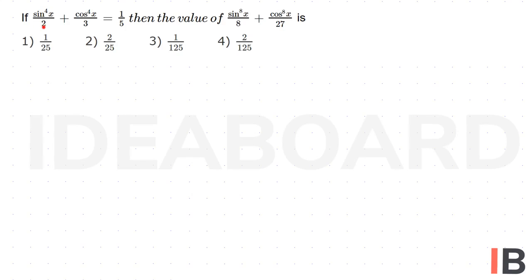If sin to the power of 4x by 2 plus cos to the power of 4x by 3 is equal to 1 by 5, then the value of sin to the power of 8x by 8 plus cos to the power of 8x by 27 is?